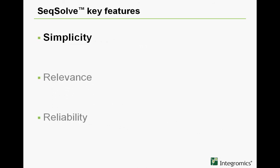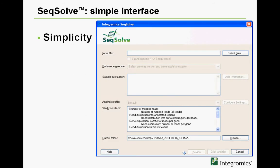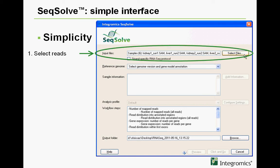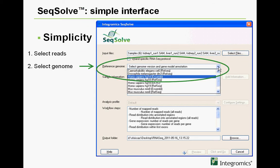First, simplicity. SIGSOLVE is extremely easy to use. This is the main interface of the RNA-seq workflow. To run an analysis, you just need to select your input files, which are mapped reads, usually in SAM, BAM, or BED format, indicate the genome you're working on, and your favorite gene annotation, for instance RepSeq or Ensembl, and that's all — you're ready to go.